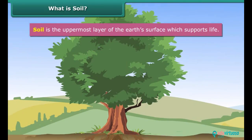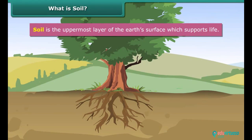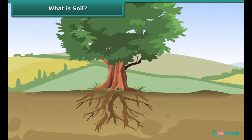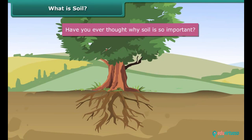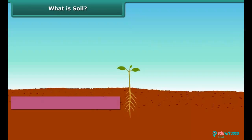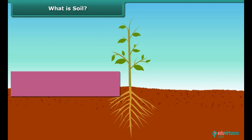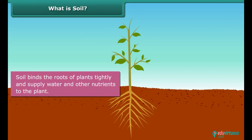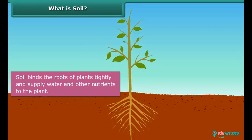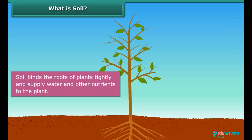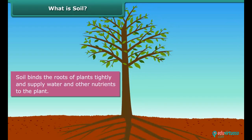What is soil? Soil is the uppermost layer of the earth's surface which supports life and it is found everywhere. But have you ever thought why soil is so important? Well, soil is needed for the growth of plants. It binds the roots of plants tightly and supplies water and other nutrients to the plant.